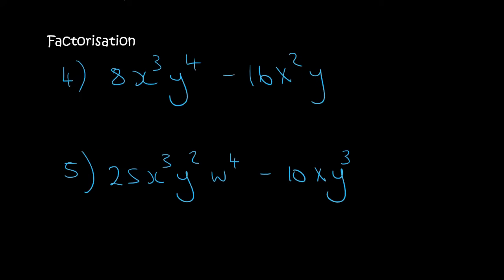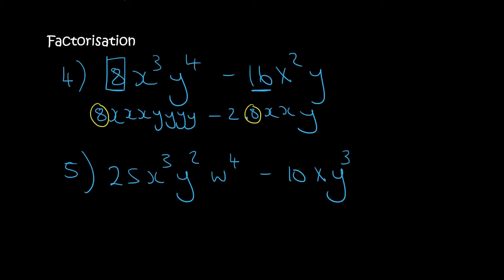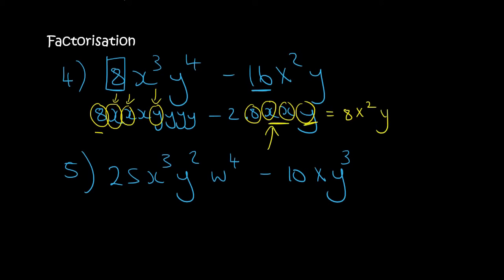If you want to use that long method just until you become more familiar, that's absolutely fine. For 8x³y⁴ minus 16x²y: write it out as 8·x·x·x·y·y·y·y minus 2·8·x·x·y. The number 8 is common. They share two x's and one y. So we take out 8x²y. In the first term we are still left with x and three y's, giving xy³. In the second term we are left with minus 2. So the answer is 8x²y(xy³ minus 2).